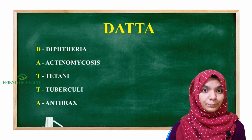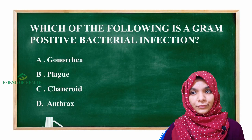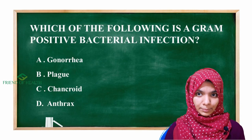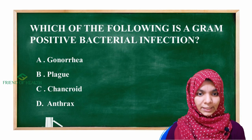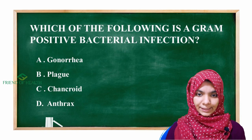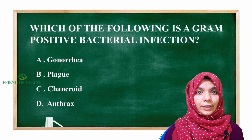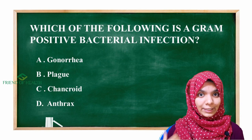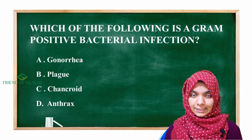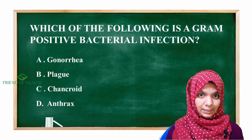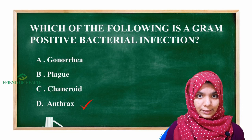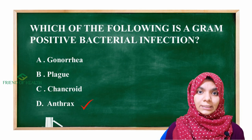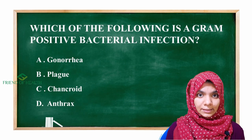Now let us revisit the question: which of the following is a gram positive bacterial infection? Option A gonorrhea, B plague, C chancroid, D anthrax. Since all bacilli are gram negative except DATTA, and A in DATTA stands for Anthrax, anthrax is gram positive. So the answer is D — anthrax.